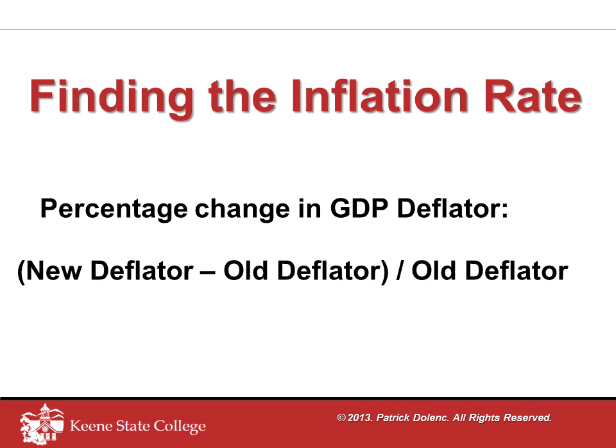To find a percentage change, we'll take the new value of the deflator, subtract the old value of the deflator, take that difference, and divide it by the old value of the deflator. Be careful! When you're calculating inflation rates, you always want to look at two consecutive years. As you work your way through the table, you will need to keep updating the denominator as you change the two consecutive years being examined.